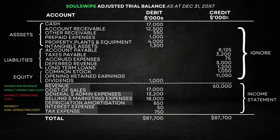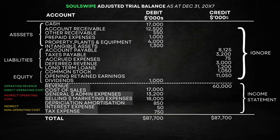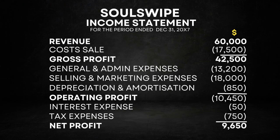It's important to note that if depreciation and amortization expenses are not related to operational assets, they would be considered indirect non-operating costs. However, for this video, we assume they are used in operations. Now we take these categorized expenses from the adjusted trial balance and place them in the corresponding sections of the income statement. This gives us a revenue of $60 million, just like before.